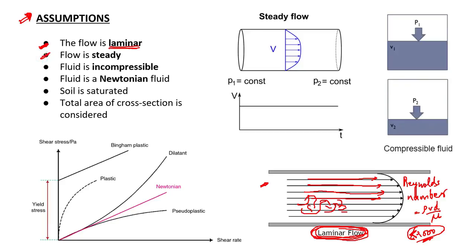Second assumption is that the flow is steady. That means with time the velocity of the water is not changing — as seen in a flat velocity-versus-time graph. The velocity at this place at any point in time is the same, and as the area is not changing, the discharge will also be the same. From any point the discharge will be the same. This should be the condition for applying Darcy's Law.